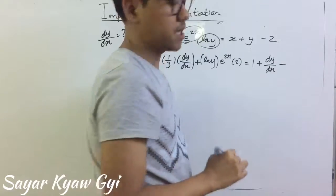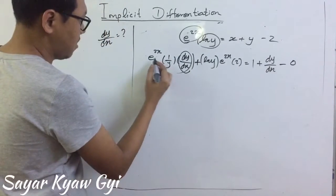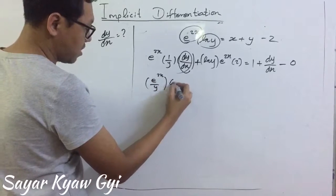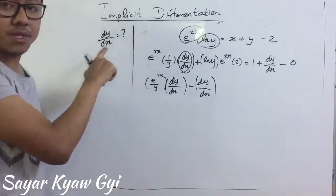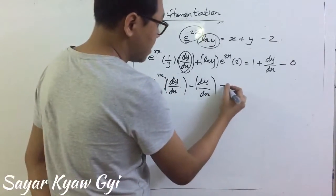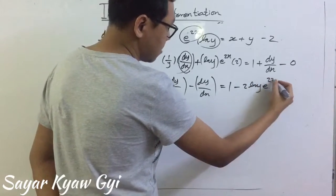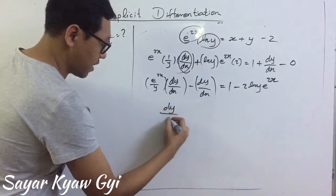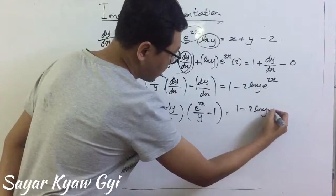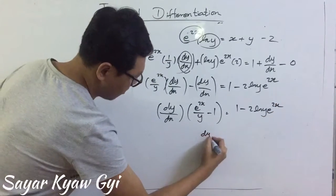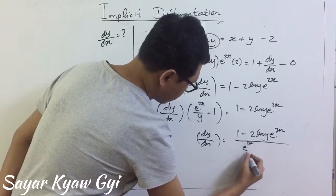Minus — when you differentiate the constant, you get 0. So I want to collect dy by dx terms. I'm going to bring them together: e to the 2x over y times dy by dx, and move the other dy by dx to here — minus dy by dx — because we want to find dy by dx on the left side. What is left is 1 minus 2 ln y times e to the 2x. So dy by dx is equal to 1 minus 2 ln y times e to the 2x over e to the 2x over y minus 1.